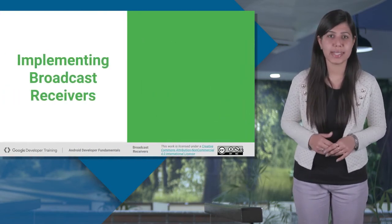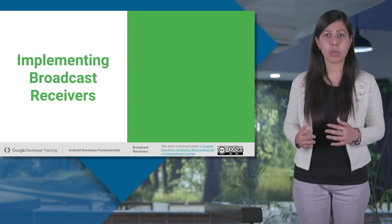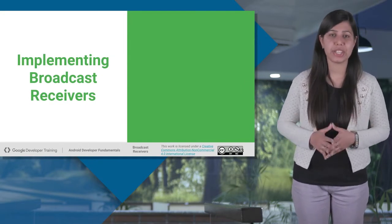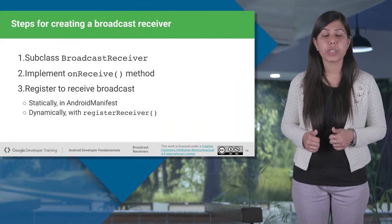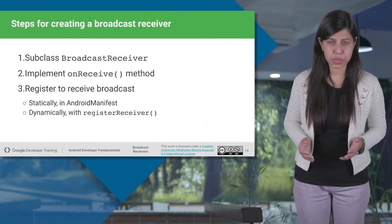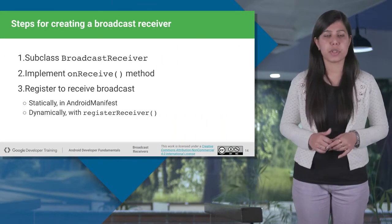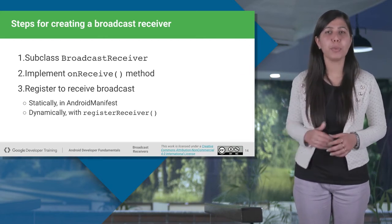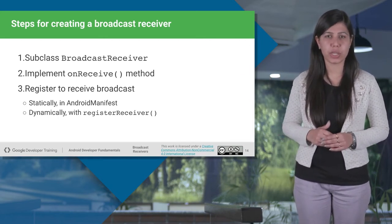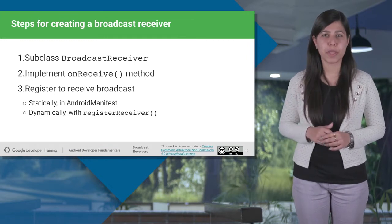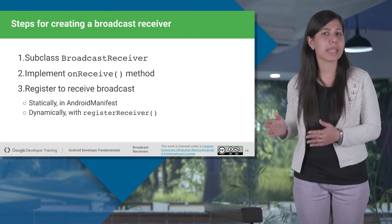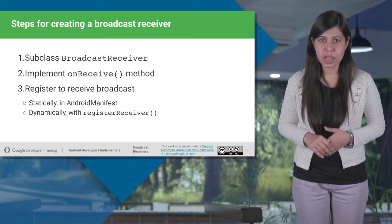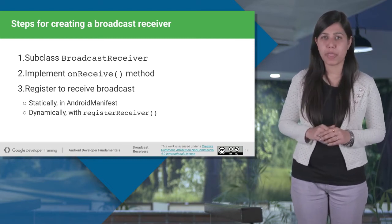Let's now understand how this whole mechanism of broadcast receivers can be implemented. In order to create a broadcast receiver, a new class needs to be created which is a subclass of the BroadcastReceiver class, with the onReceive method being implemented from this base class. Whenever the event occurs, Android calls the onReceive method.